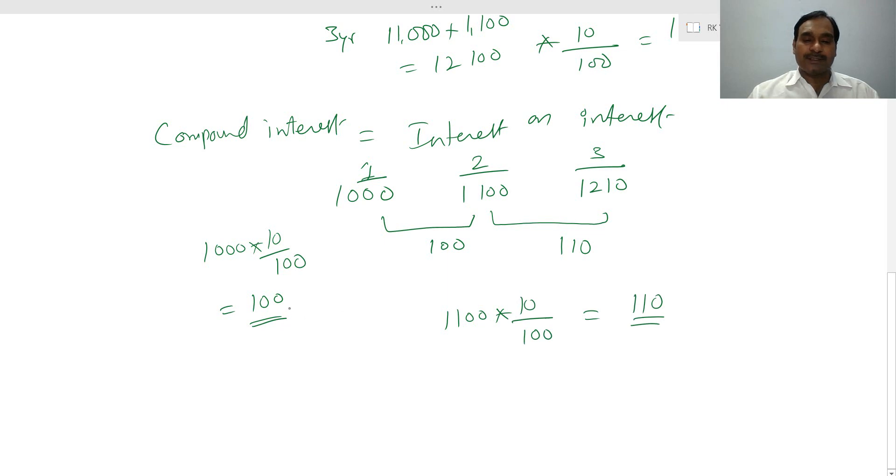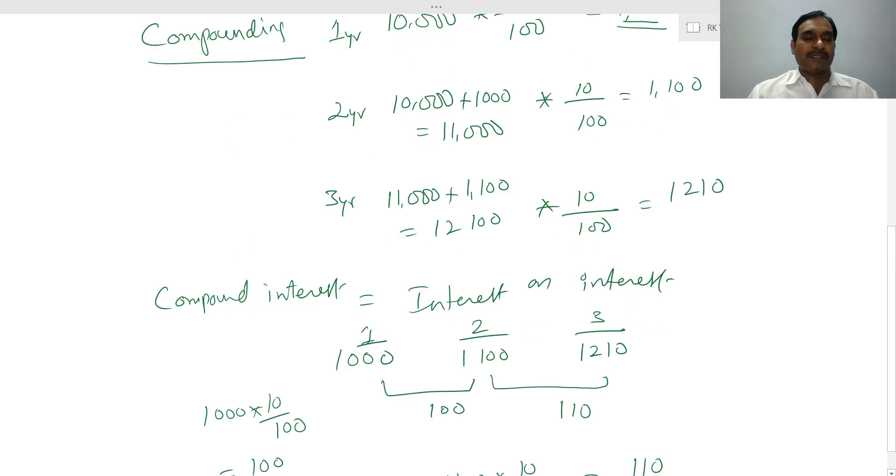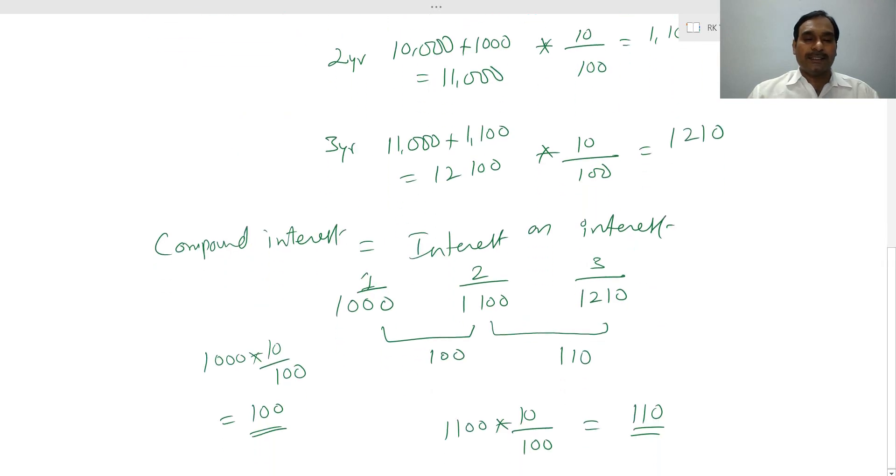So this we call as compound interest. That means when interest is earned on interest, we call that as compound interest. So these are the two concepts of compounding and compound interest.